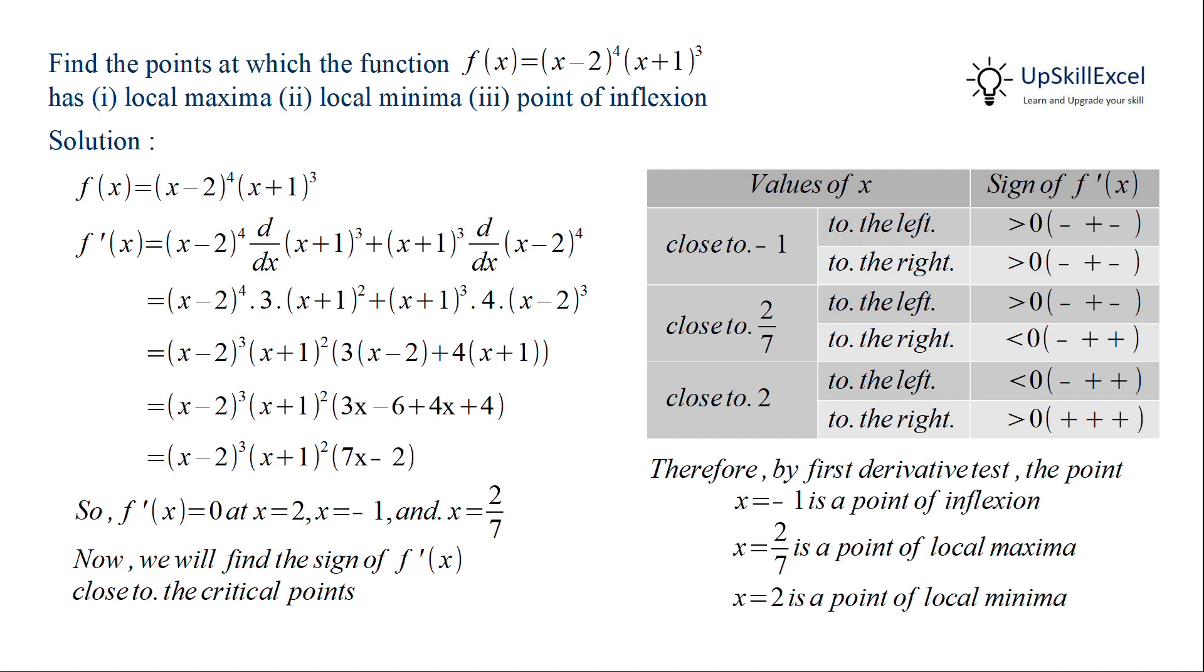Similarly at x = 2, the sign changes from negative to positive. Hence it is a point of local minima. And at x = -1, there is no change in the sign. Hence it is a point of inflection.